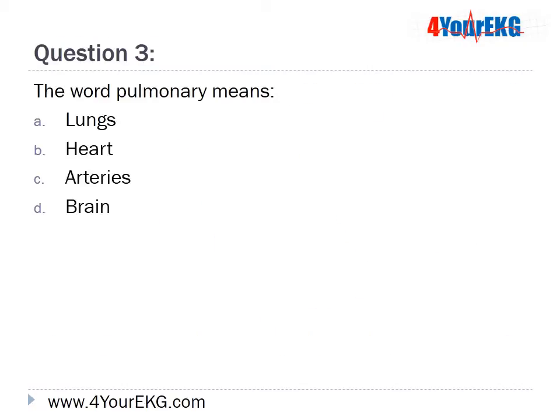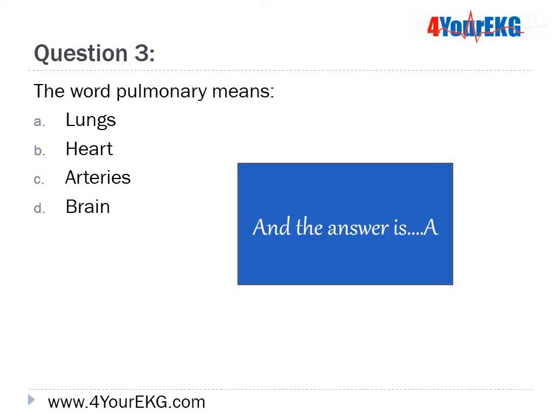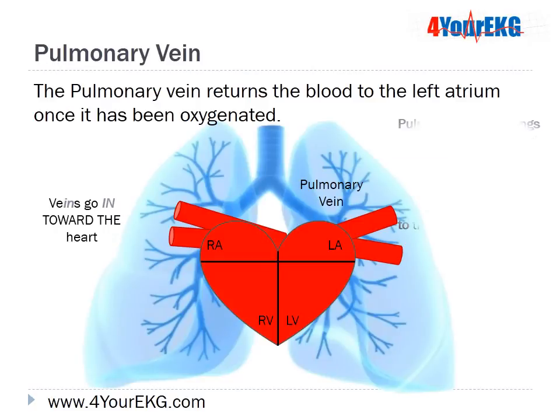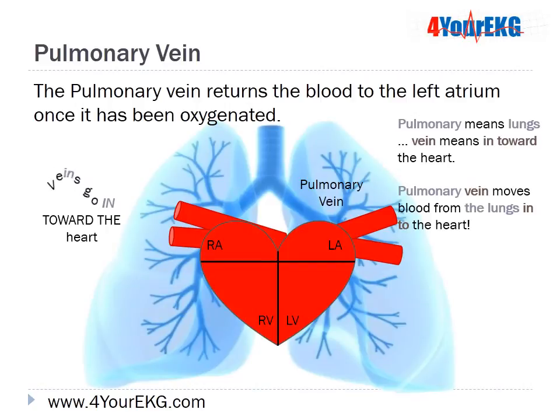Question 3: The word 'pulmonary' means — A. Lungs, B. Heart, C. Arteries, or D. Brain. The answer is A — Lungs. Remember that pulmonary is the term for lungs.